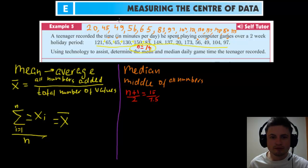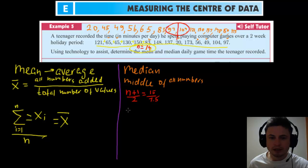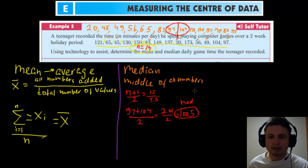Counting from the start to find the 7th and 8th values, we land on 97 and 104. Since the median falls between two values, we need to find the mean of these two numbers: 97 + 104 = 201, divided by 2, which gives us 100.5. So 100.5 is our median. We'll double-check this on the calculator later — it's always a good idea to verify your work.